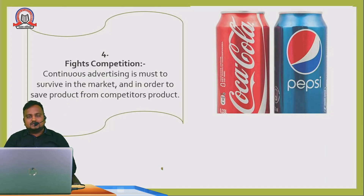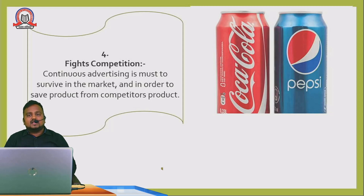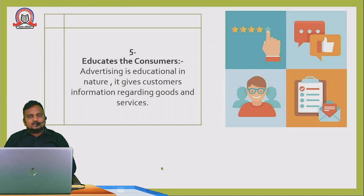The next benefit is that it fights competition. Continuous advertising is a must to survive in the market and to save the product from competitive products. For example, Coca-Cola and Pepsi continuously advertise. Similarly, Fair and Lovely cream keeps making changes — normal cream, HD glow, and so on — continuously advertising new variants. Johnson's Baby Powder is another example — if advertising continues, it helps fight competition.